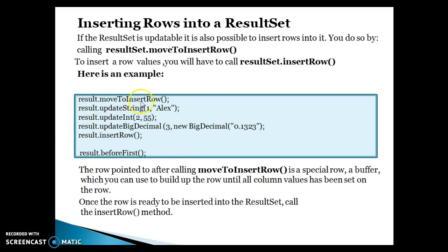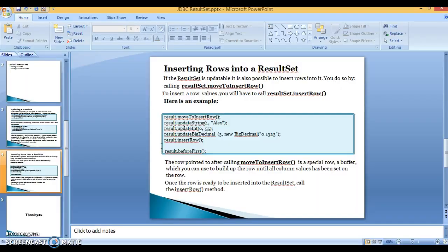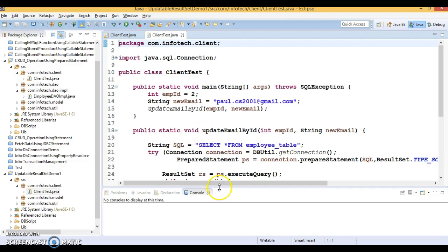So here is the code snippet. First you call moveToInsertRow() on the ResultSet object, after that you set values for every column, and finally you call insertRow(). If you want to put the cursor before the first row after inserting, you can do so. The row pointed to after calling moveToInsertRow() is a special buffer row which you use to build up the row until all column values have been set. Once the row is ready, you call insertRow() to insert it into the ResultSet and database.